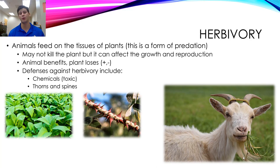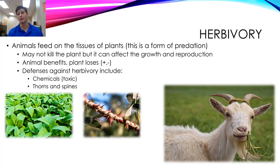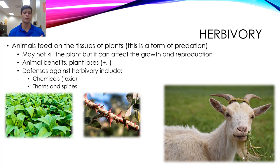Plants also put up defenses against herbivory, similar to the evolutionary arms race between predators and prey. There is an arms race between herbivores and plants that can involve toxic chemicals — like nicotine in the tobacco plant, an adaptation to poison insects living in it, which we later discovered was addictive and used for other purposes. Other defenses include thorns and spines, like those on a rosebush, which can spear insects or deter large herbivores from chomping down on the stem.